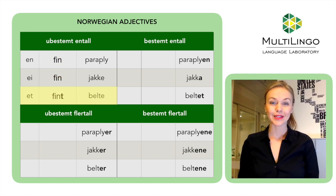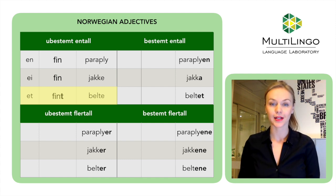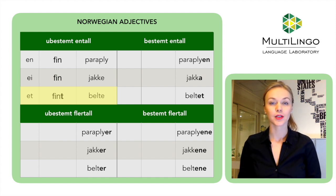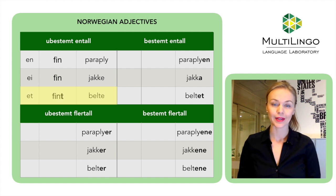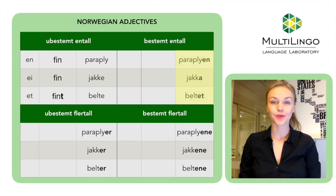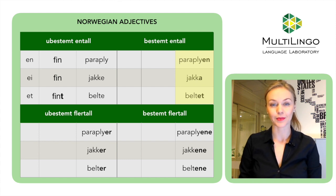But if we describe a neuter noun like 'et belte,' we'll have to remember to put a little ending on the adjective form. Et fint belte — a nice belt.